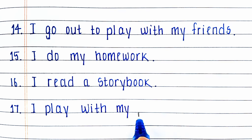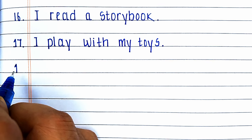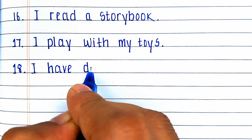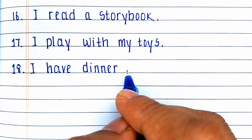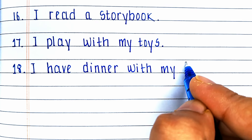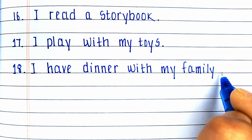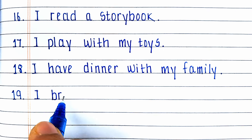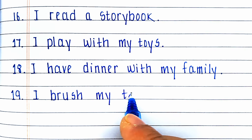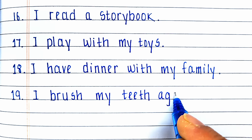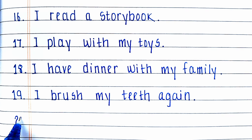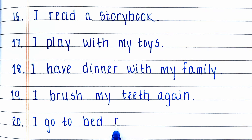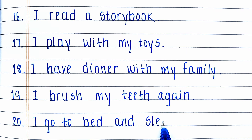Seventeenth line is: I play with my toys. Eighteenth line is: I have dinner with my family. Nineteenth line is: I brush my teeth again. Twentieth and the last line is: I go to bed and sleep peacefully.